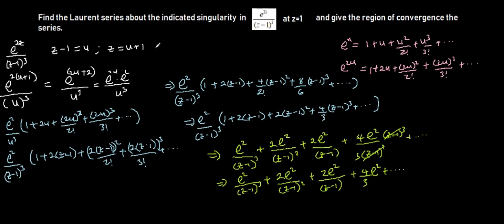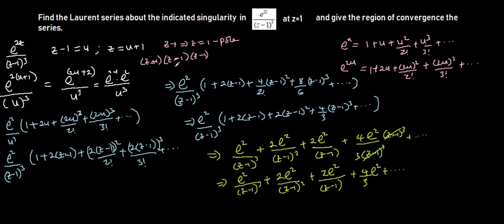Now we are given a condition. Looking at what we have, z minus 1 appears three times multiplying each other, which means this is a pole of order 3 — or equivalently, a triple pole — at z equal to 1. From this we discover that this series converges at all points z not equal to 1. At z equal to 1 the series does not converge, but everywhere else it does.